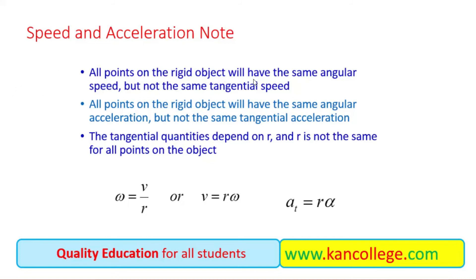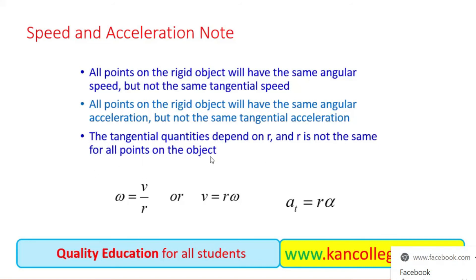All points on a rigid object will have the same angular speed but not the same tangential speed, as already discussed. Similarly, all points on a rigid object will have the same angular acceleration but not the same tangential acceleration — for the same reason as for speed. The tangential quantities depend on the radius R, and R is not the same for all points on the object. So omega equals V over R, or V equals R omega, and angular acceleration alpha relates to linear acceleration as a equals R alpha.